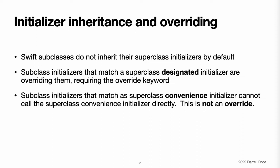Conversely, if you write a subclass initializer that matches a superclass convenience initializer, that superclass convenience initializer can never be called directly by your subclass as per the rules described in initializer delegation for class types. Therefore, your subclass is not, strictly speaking, providing an override of the superclass initializer. As a result, you do not write the override modifier when providing a matching implementation of a superclass convenience initializer.